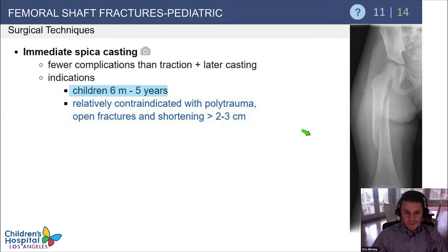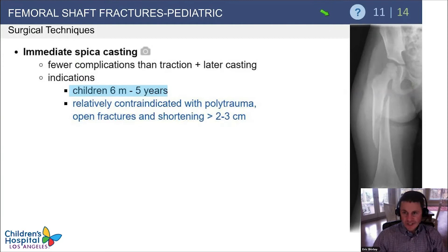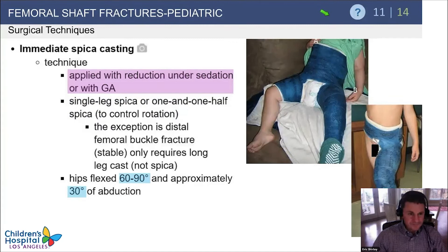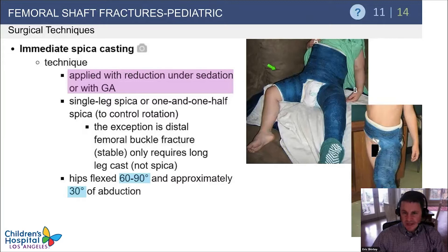Immediate spica casts are great for children six months to five years of age, and are relatively contraindicated in polytrauma or open fractures. You can use a single leg spica or a one-and-a-half spica. If it's just a distal femoral buckle, a long leg cast is probably okay. There are some differences in how these casts are applied.